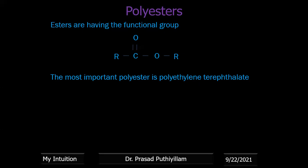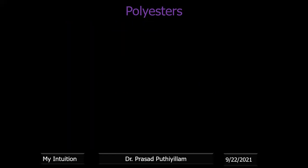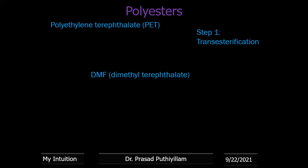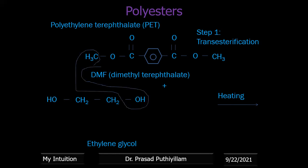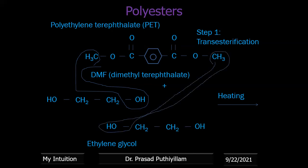The most important polyester is polyethylene terephthalate (PET). Polyesters are available with trade names like Dacron, Mylar, Turaline, and Alkyd Resins. PET preparation involves two steps. Step one is transesterification: dimethyl terephthalate (DMT) reacts with ethylene glycol (HOCH2CH2OH) on heating. Two molecules of methanol are removed per reaction, giving a product with CH2CH2OH groups on either side of the terephthalate unit.